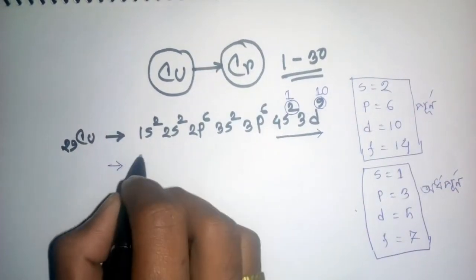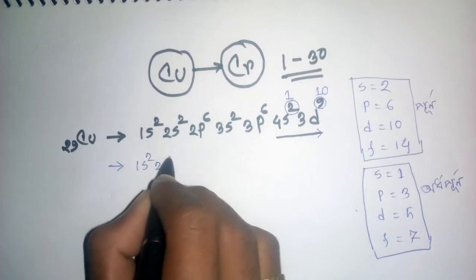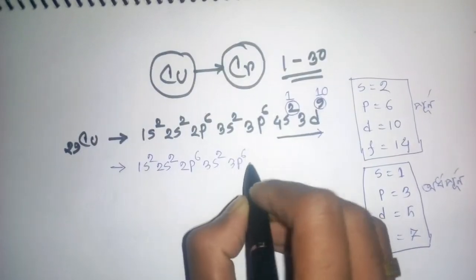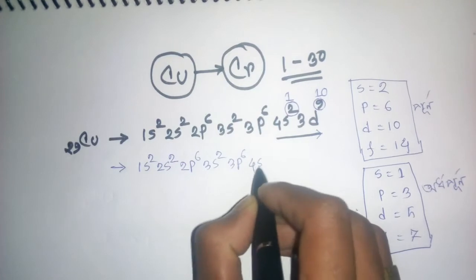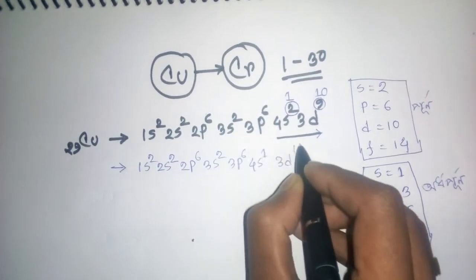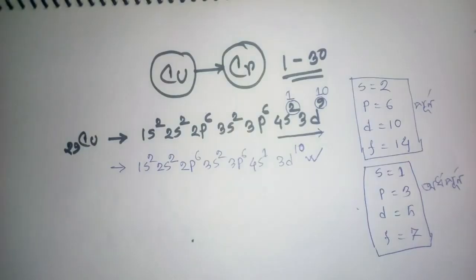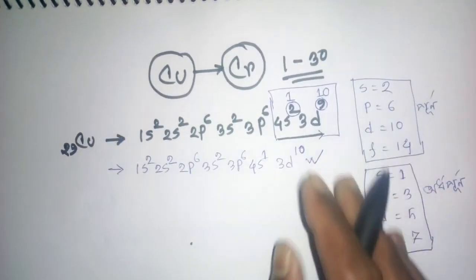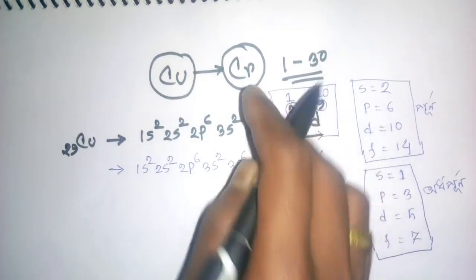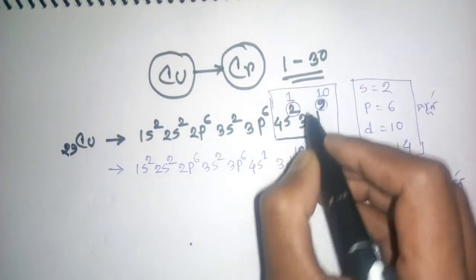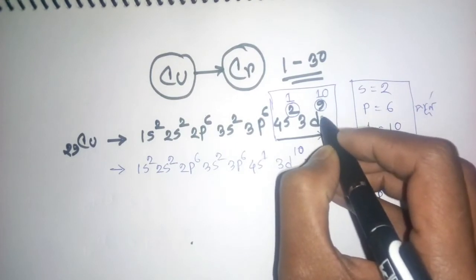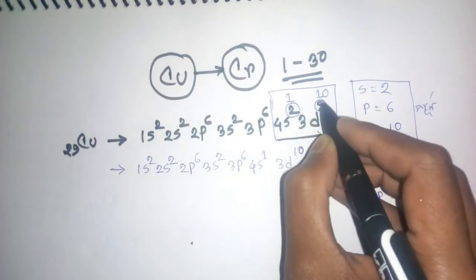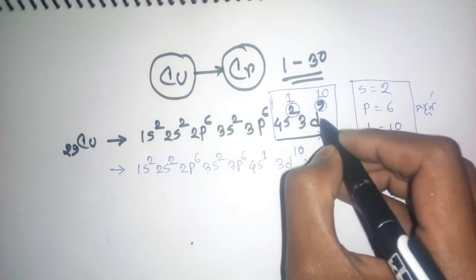1s², 2s², 2p⁶, 3s², 3p⁶, 4s¹, 3d¹⁰. This is the correct electron configuration for copper. The orbital is either full or empty. When the orbital is full, it is more stable. The d orbital being full makes it more stable for copper.